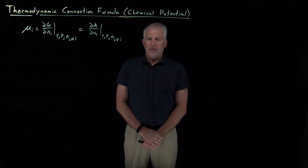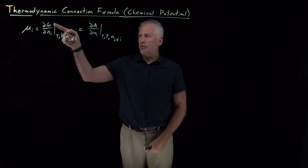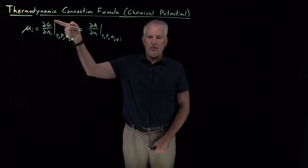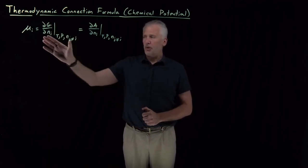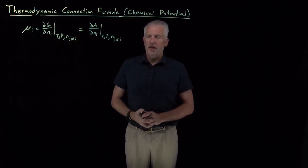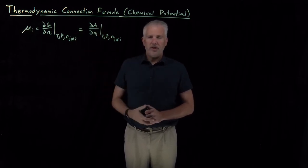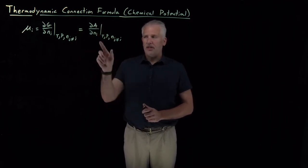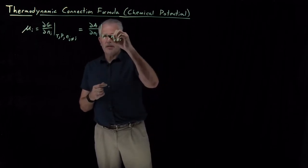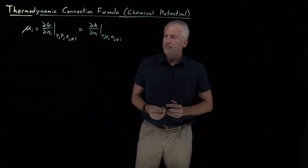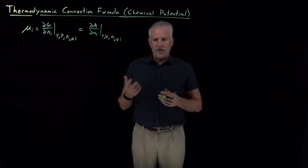We have a thermodynamic definition for the chemical potential, defining it in terms of the Gibbs free energy — the rate of change of the Gibbs free energy as we change the number of moles, the partial molar Gibbs free energy — or we could also think of it as the rate at which the Helmholtz free energy is changing as we change the number of moles, not at constant T and P, or equivalently in terms of the enthalpy or the internal energy.